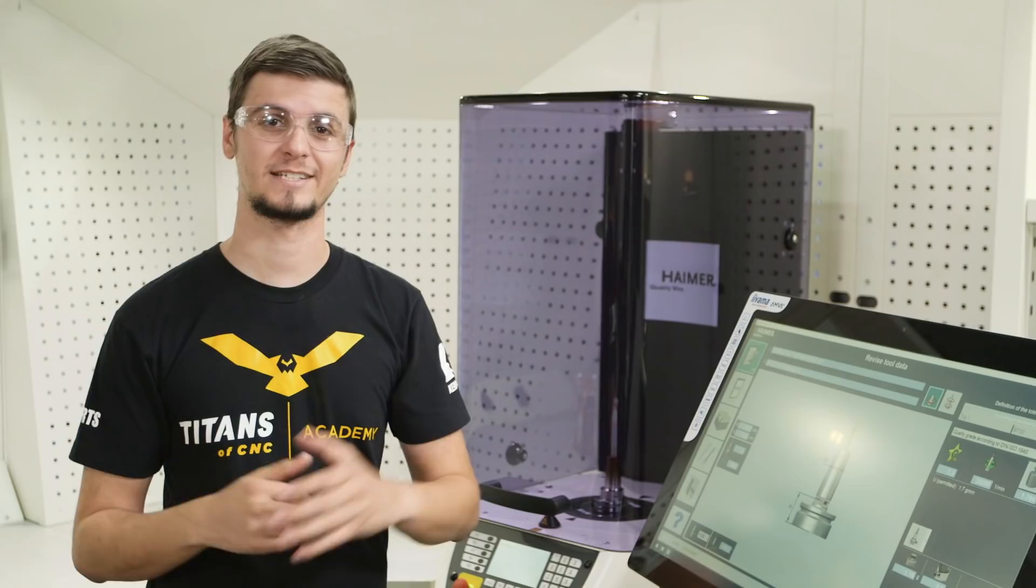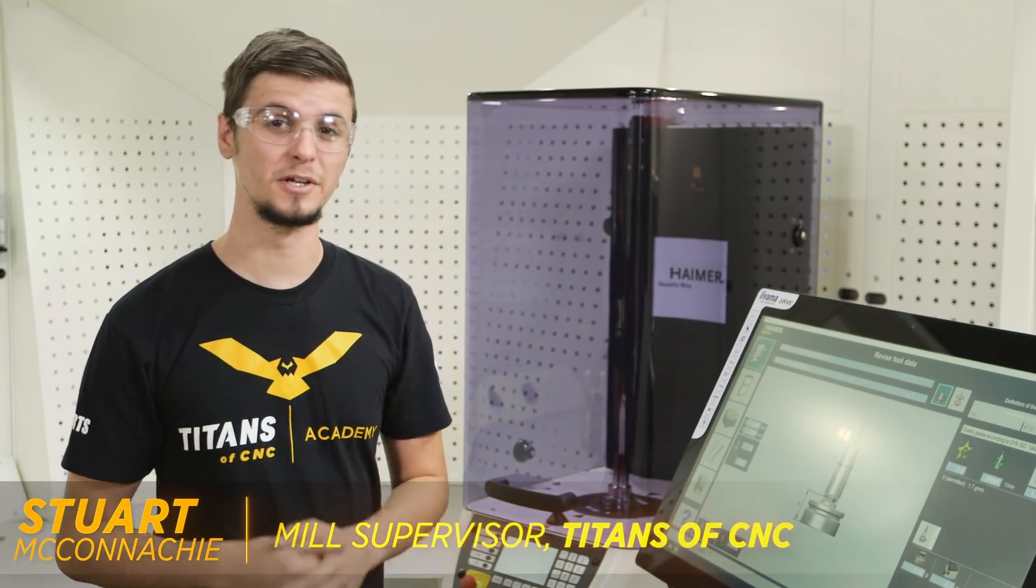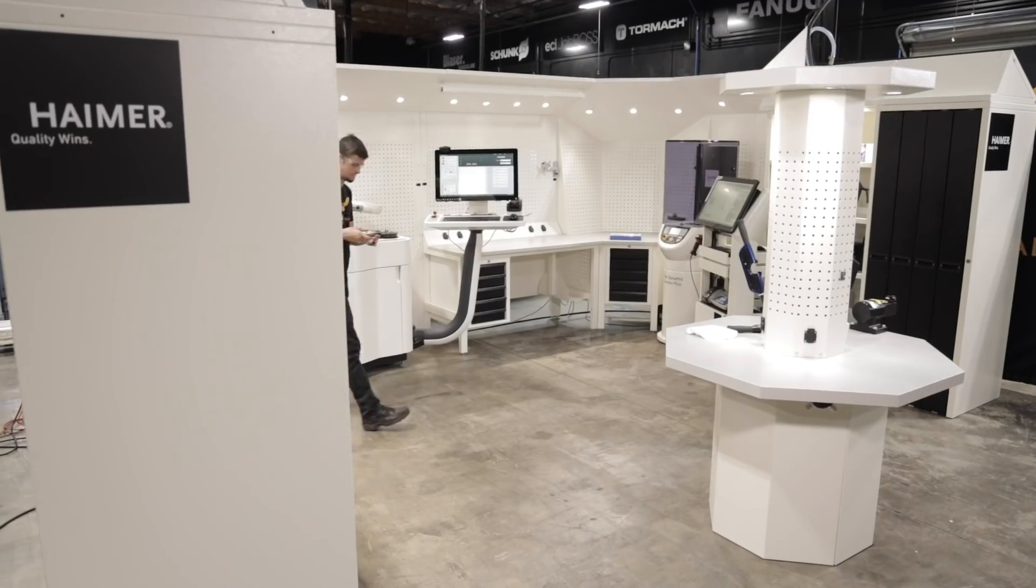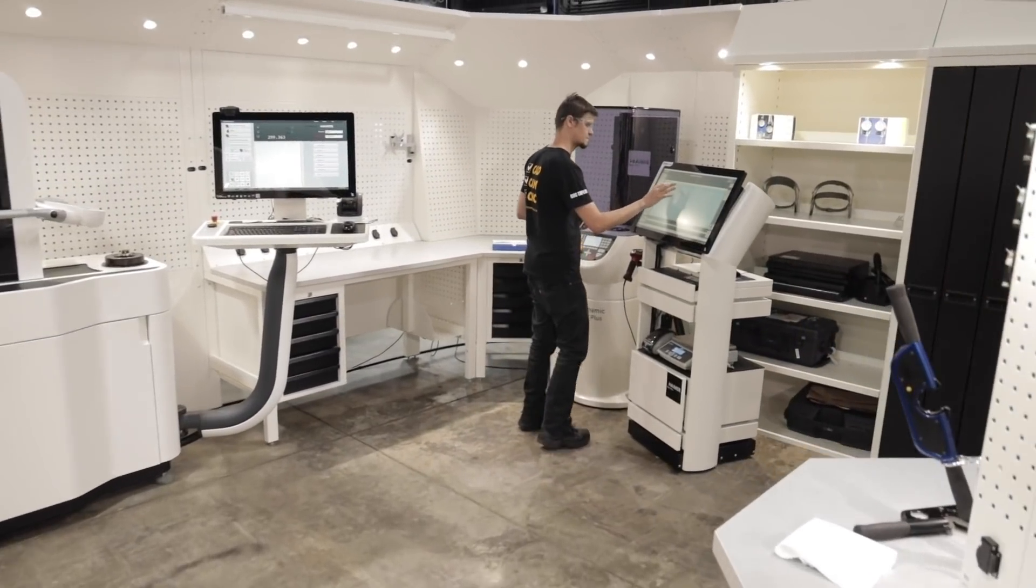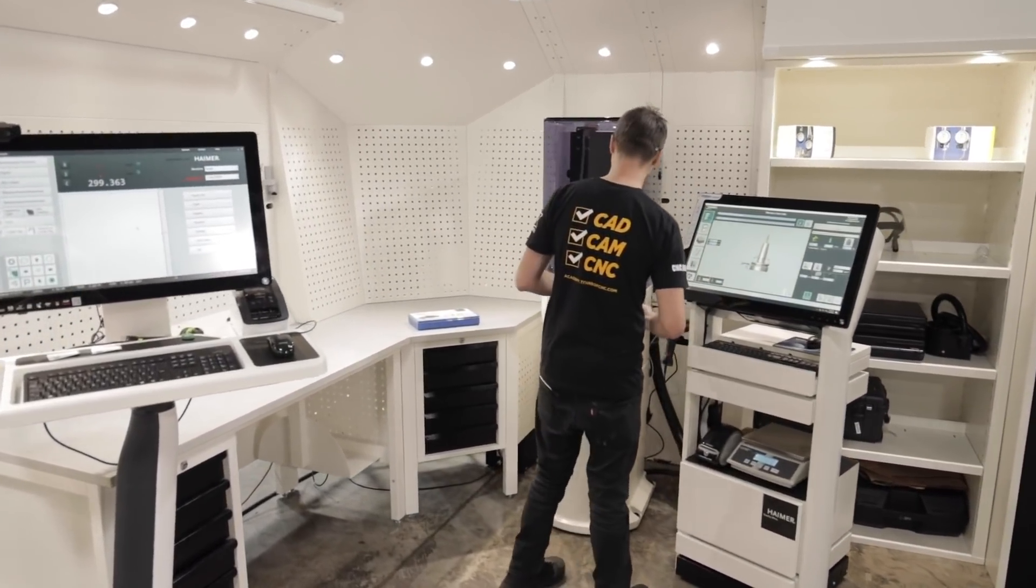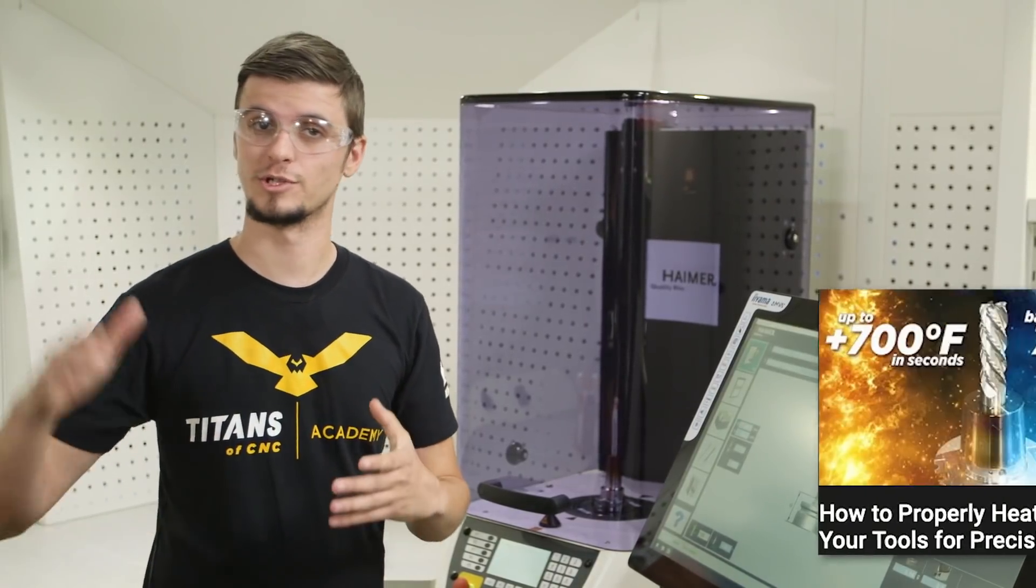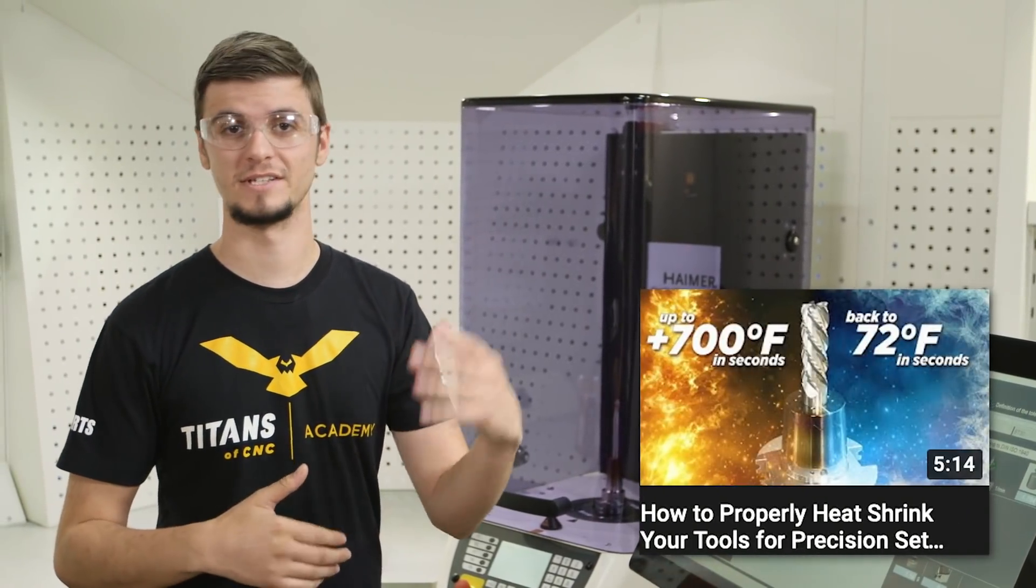Hi, I'm Stuart McConkey here at Titans of CNC, and in this video we're gonna go over the Hymer tool balancer. This is a great machine that is used to balance tool holders for high rpm machining. It's commonly used in shrink fit, which we just went over in our previous video.